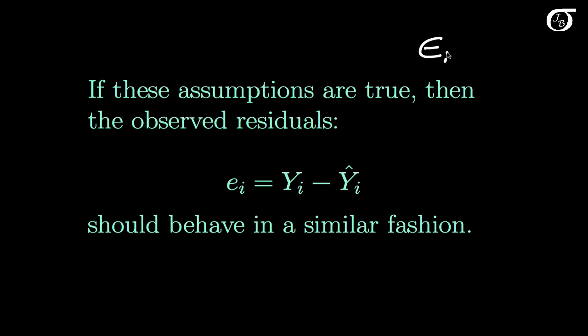Epsilon sub i would represent the true theoretical error term for the i-th individual. Whereas e sub i represents the observed residual that we see in the sample. The value of y for that individual minus the predicted value of y from the model.